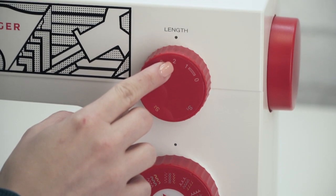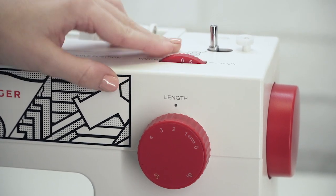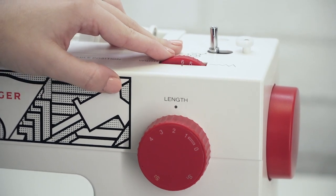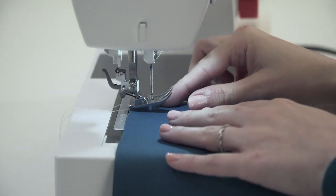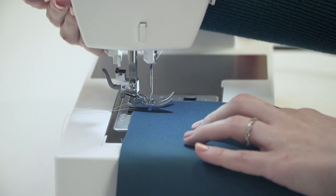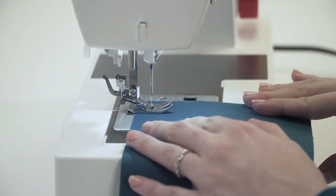My stitch length is set to 2 and I'm changing my stitch width all the way to 6 for a wide stitch. Place your fabric and bring down the presser foot. Begin sewing by pressing down your foot on the pedal.